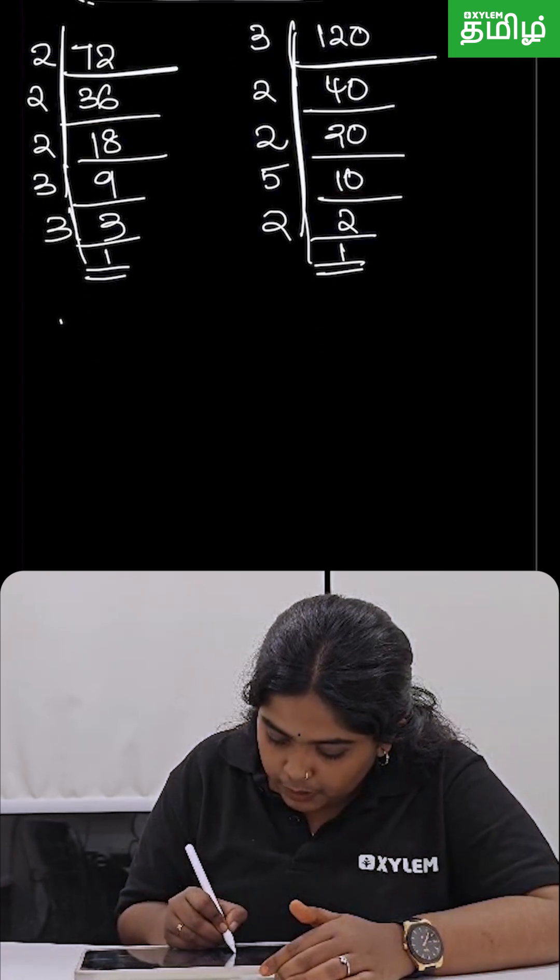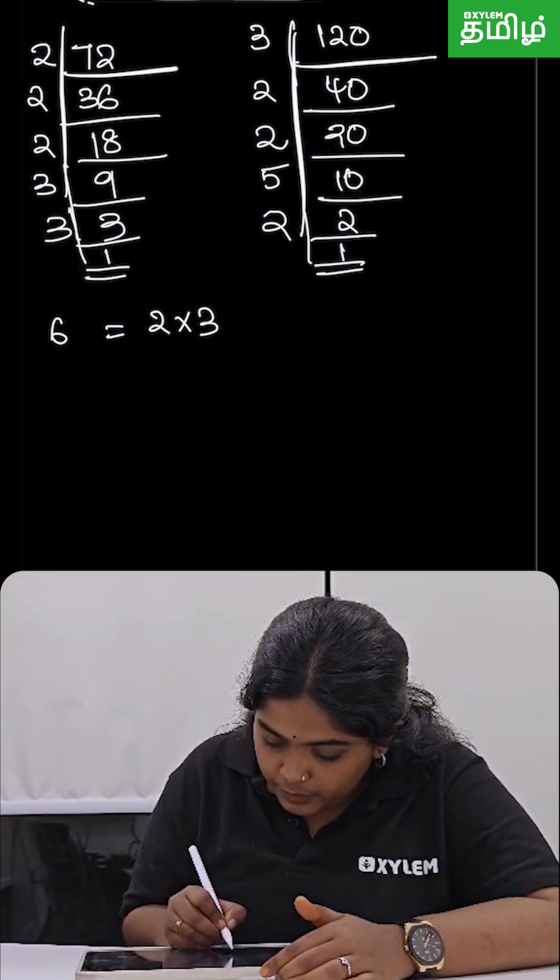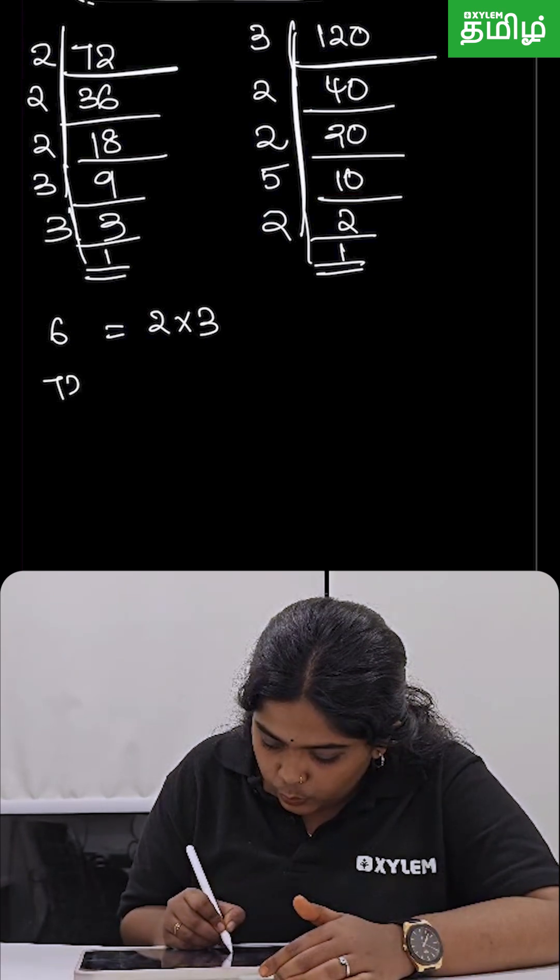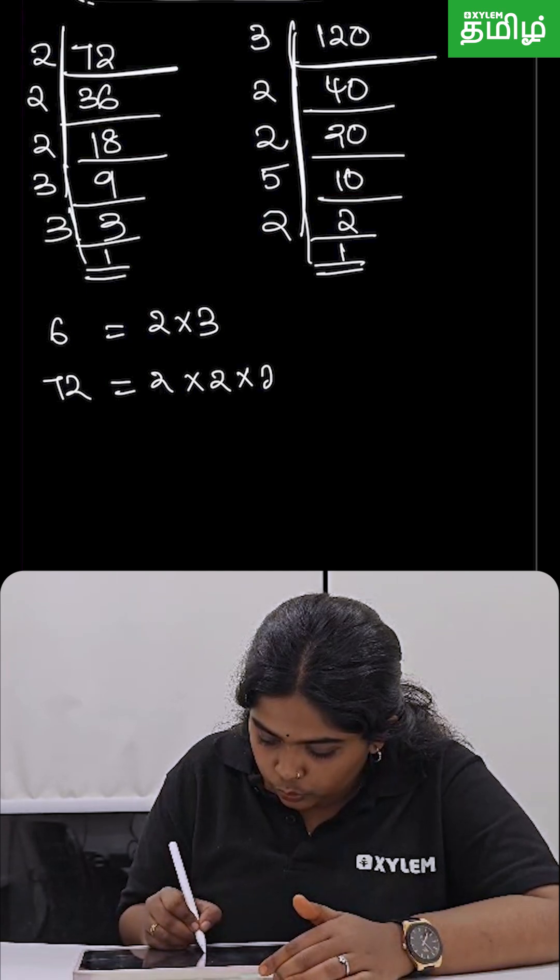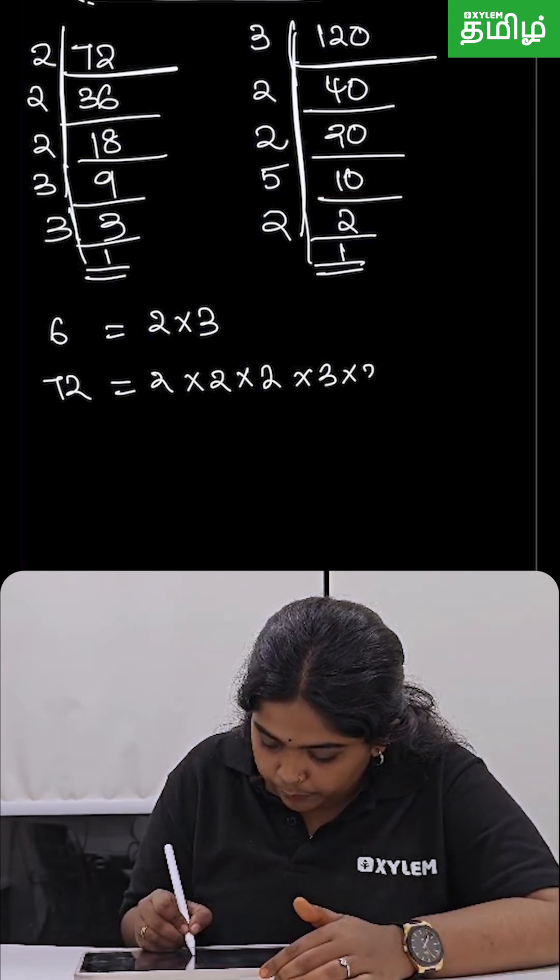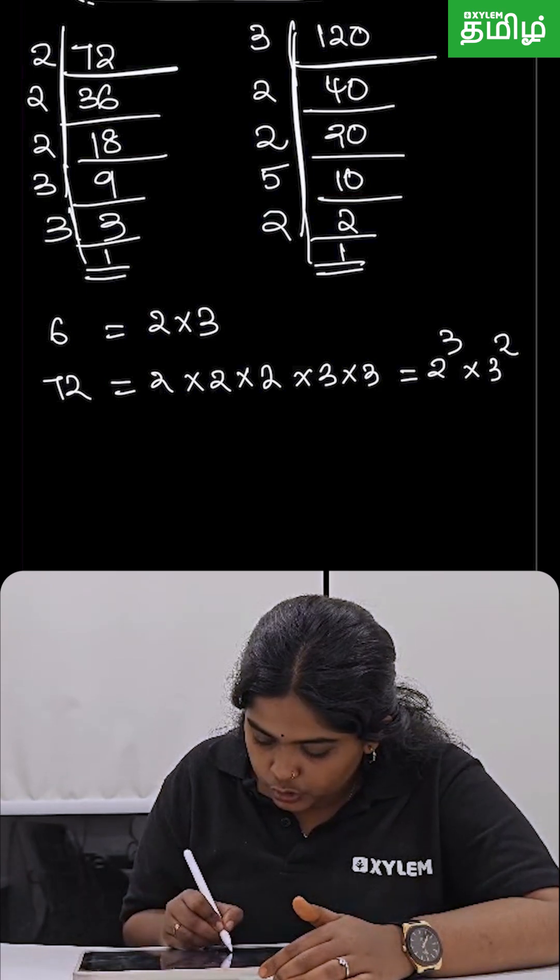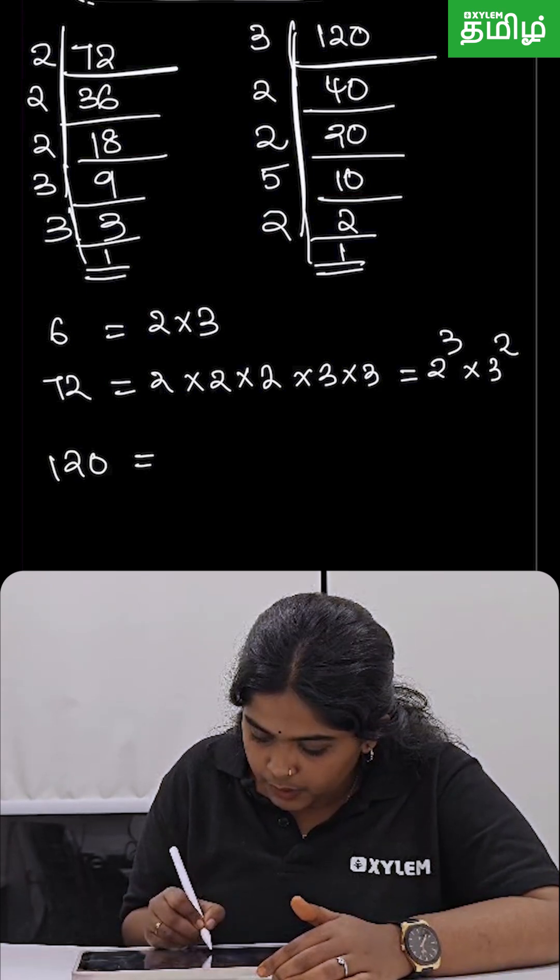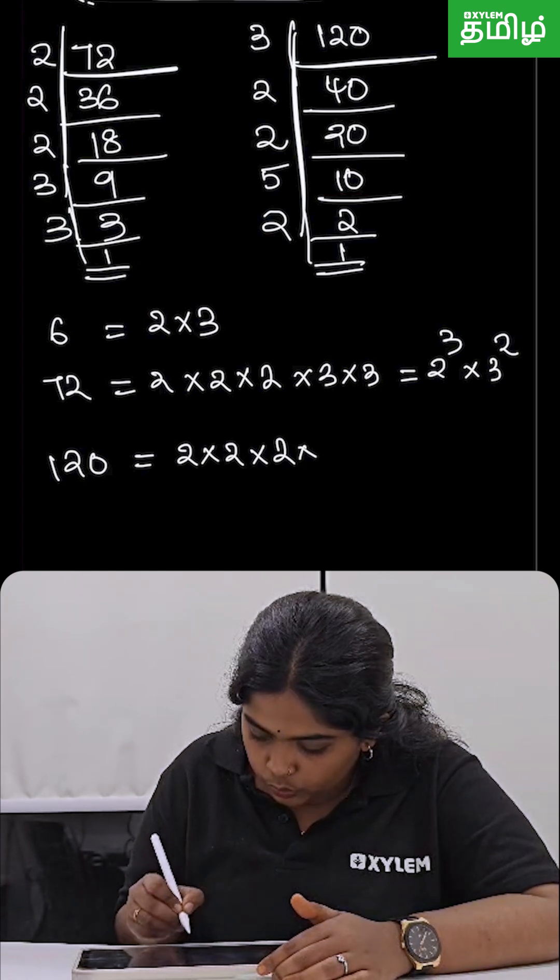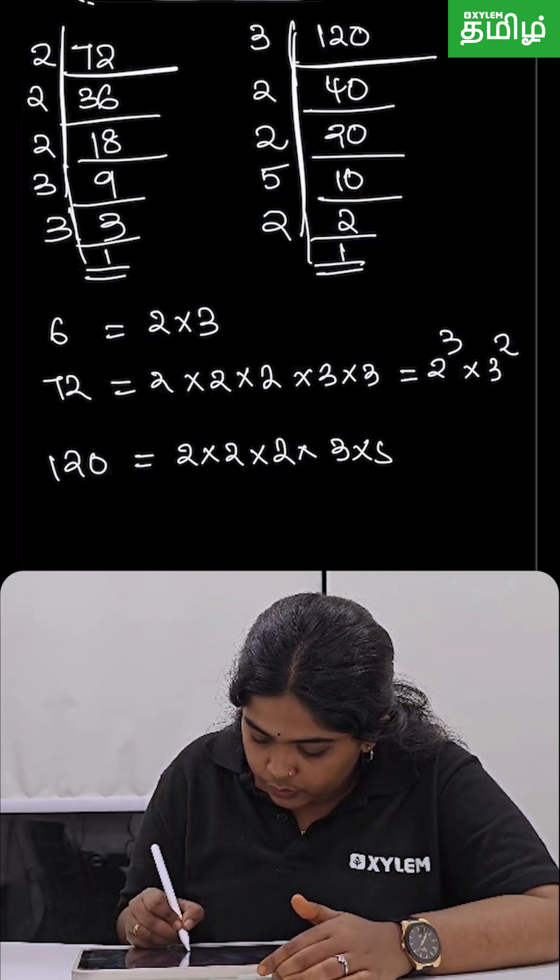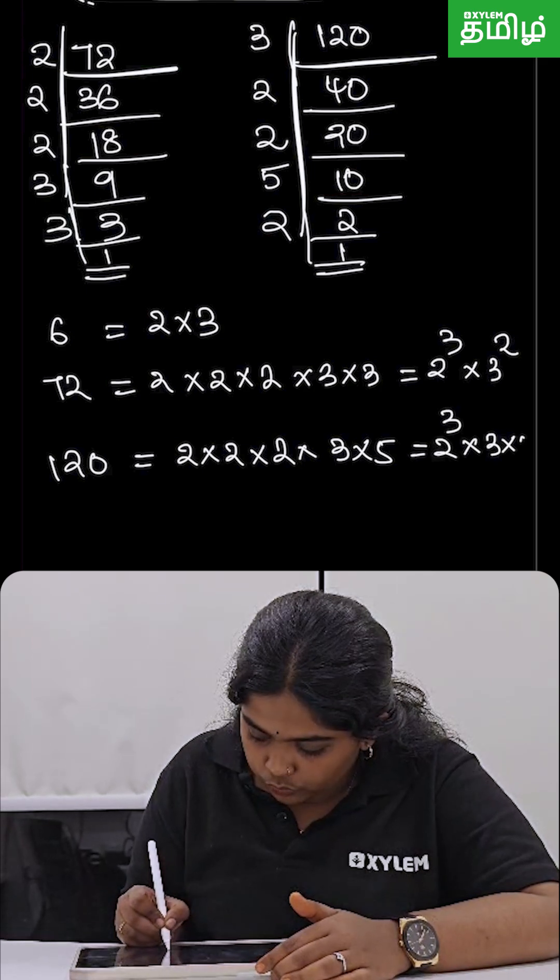Okay, so here we are going to write the factorization. So 6 is going to be 2 into 3, and 72 is going to be 2 into 2 into 2 into 3 into 3. So this can be written as 2 raised to 3 into 3 raised to 2. And 120 is 2 into 2 into 2 into 3 into 5, that is equal to 2 raised to 3 into 3 into 5.